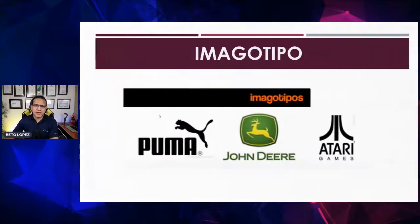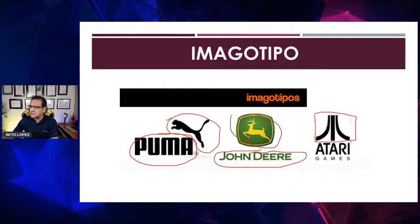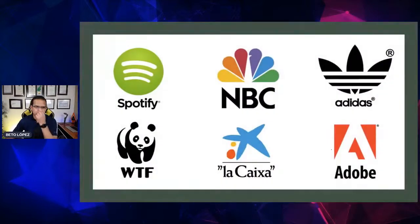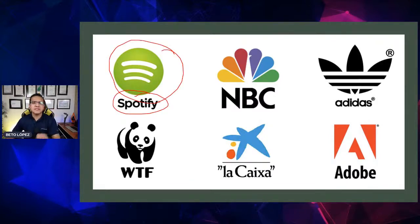Otro ejemplo de imagotipo: en Puma puedes ver la parte del ícono, pero también el logo. John Deere también utiliza el ícono por separado y el logo por separado. Y Atari puede usar solo el ícono o solo el texto. Ejemplos de imagotipo son Spotify, NBC y Adidas. Han visto que en las playeras a veces solo aparece el ícono y no el logo.